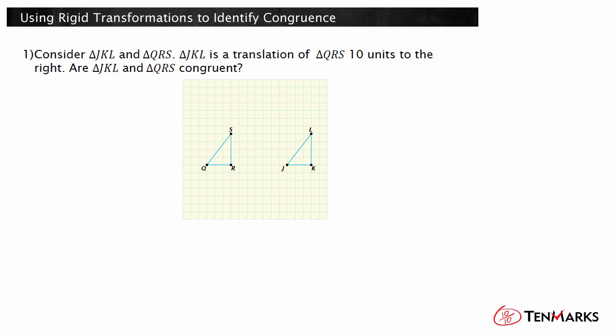We are told that JKL is a translation of QRS. Translating QRS preserves the side lengths. We can see this is true on the image. Both QR and its image JK after translation are three units long. SR and LK are each four units long.